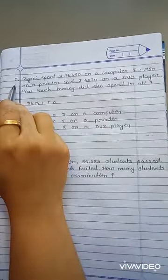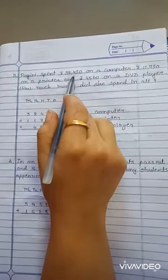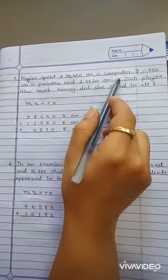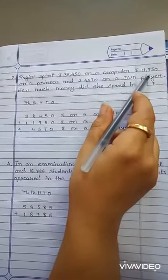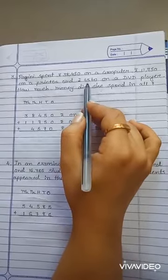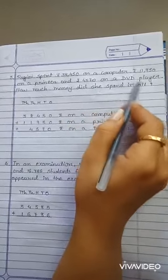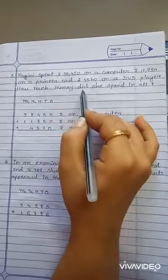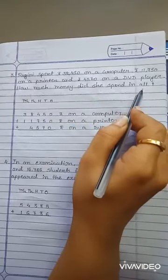Third, Ragini spent rupees 38,450 on a computer, rupees 11,750 on a printer, and rupees 4,570 on a DVD player. How much money did she spend in all?